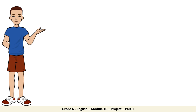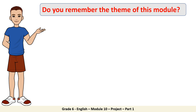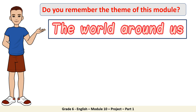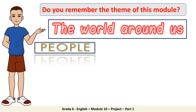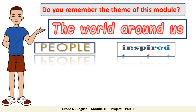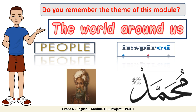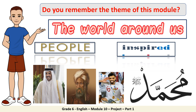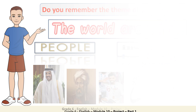Before we start explaining our lesson today, we need to remember the theme of this module. It's about the world around us. Through this title, we learn that we are learning a lot about places, things, new information, and especially about people. From learning about these people in the world, we get inspired by them to change, to become better. It's not just restricted to one type of famous people — they could be inspiring in all walks of life.